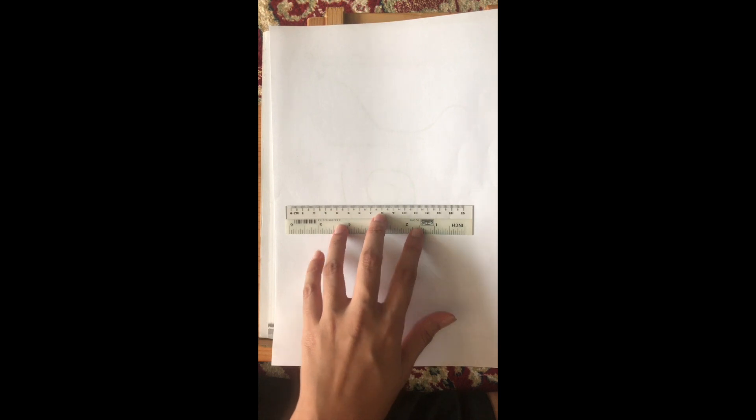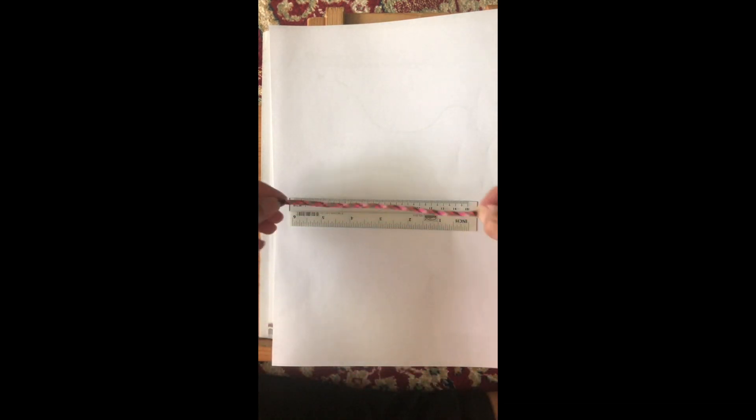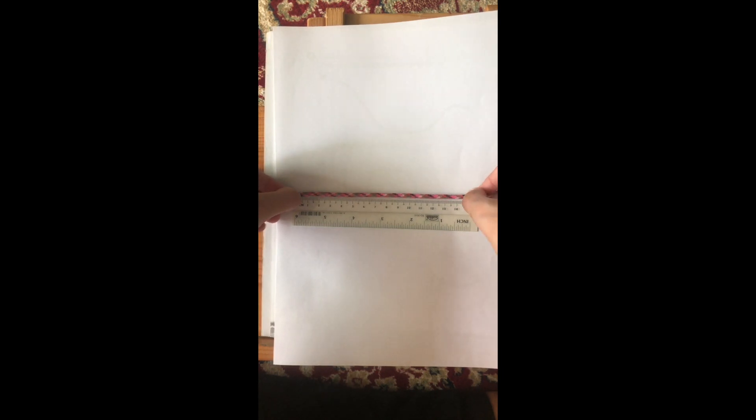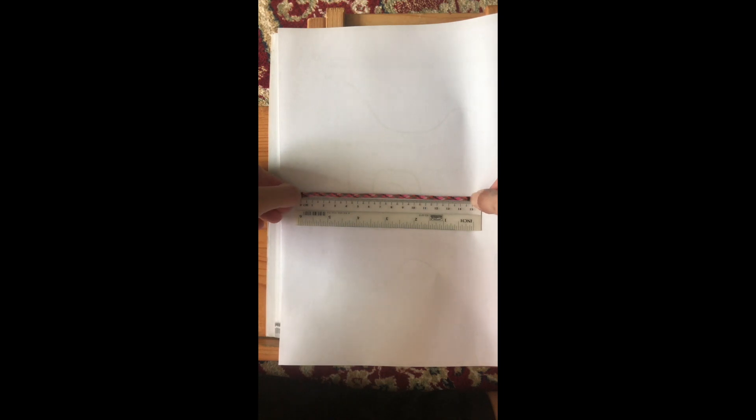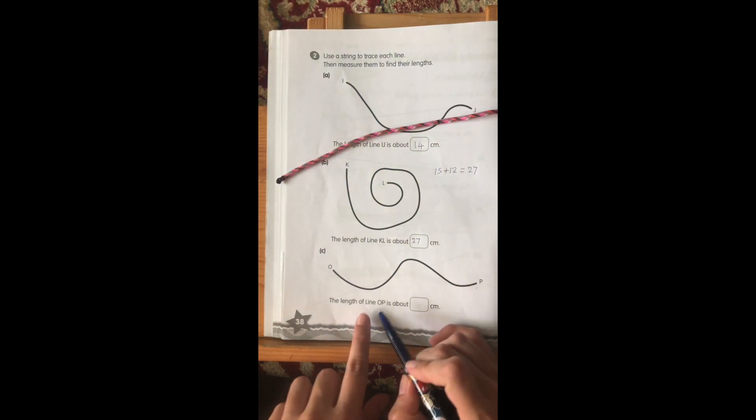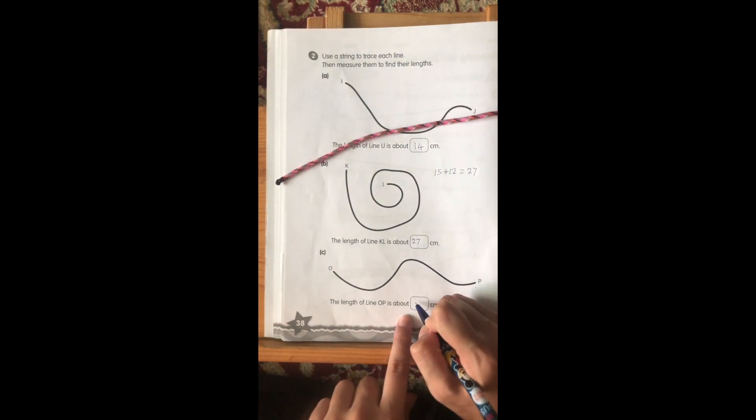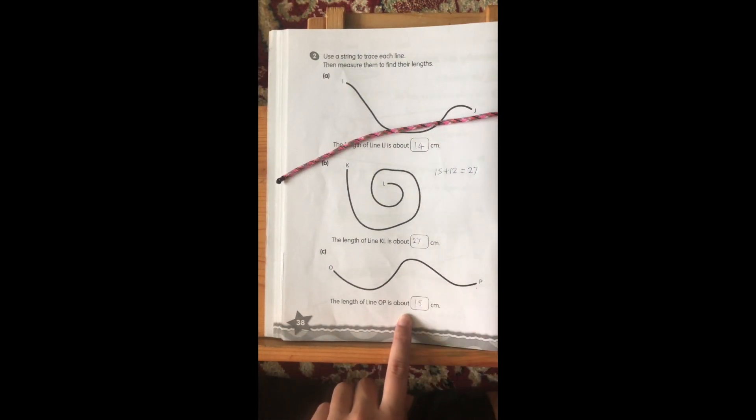So, again, I've already marked it against a white piece of paper. I put my ruler down. At my first mark, I put it at zero. And I stretch it. And it stops. So, I can see that this line is about 15 cm. I'm going to write down the length of line OP is about 15 cm.